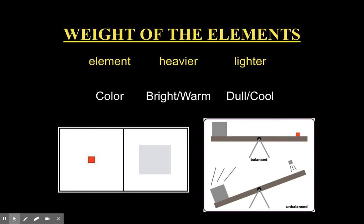When it comes to color and visual weight, bright colors and warm colors carry more visual weight. Dull colors and cool colors are lighter and carry less visual weight. You notice bright and warm colors more because they stand out, which creates visual weight.